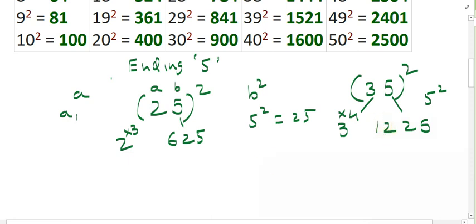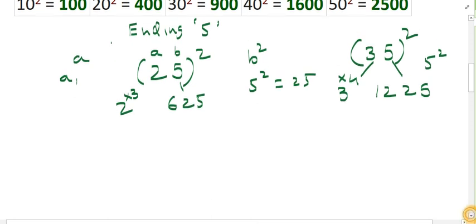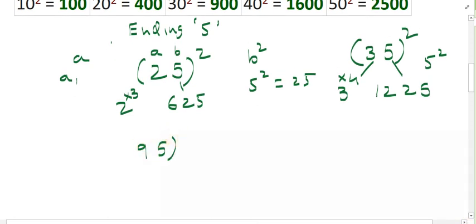Let's go for one more example. Let's go for 95 whole square. 5 square, 25. And this is 9. Immediately after 9, you get 10. So 9 into 10, we get 90. So this you can do all numbers ending with 5.